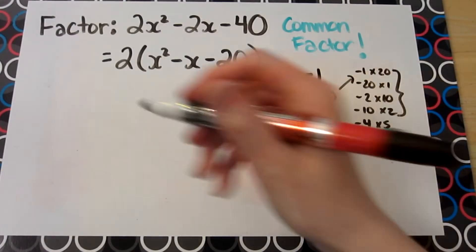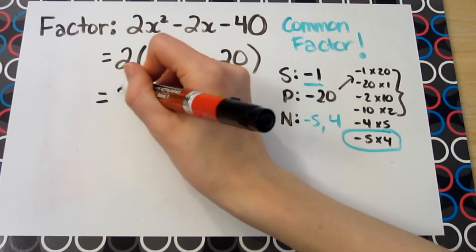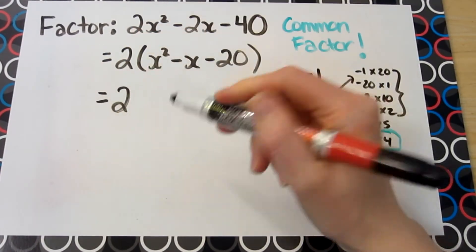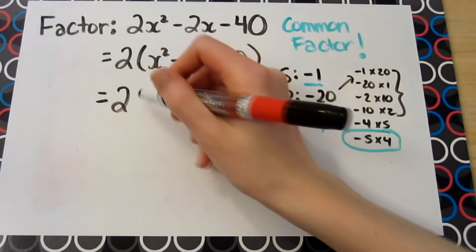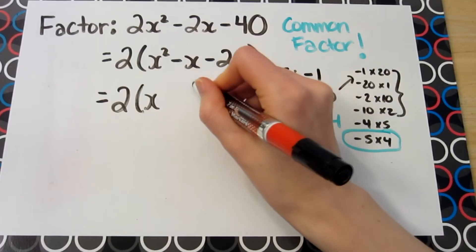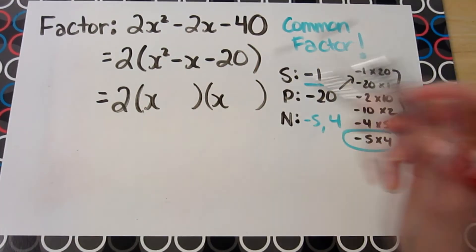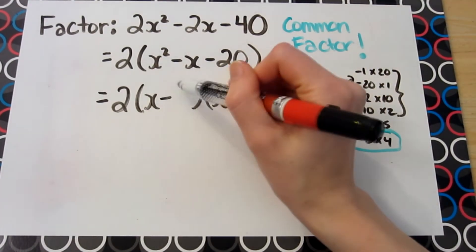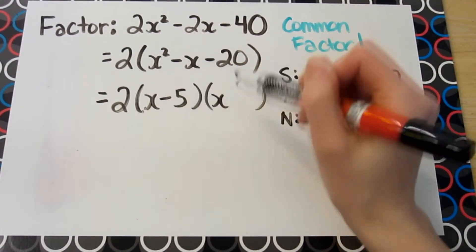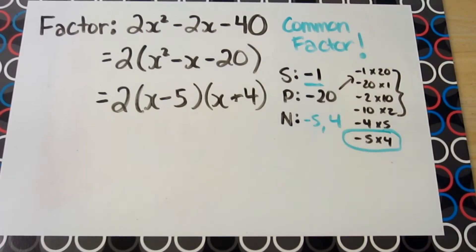This means we can go straight to the final answer. We keep the common factor of 2, put an x in both sets of parentheses, and include our numbers: negative 5 and positive 4. And that's the final factored answer.